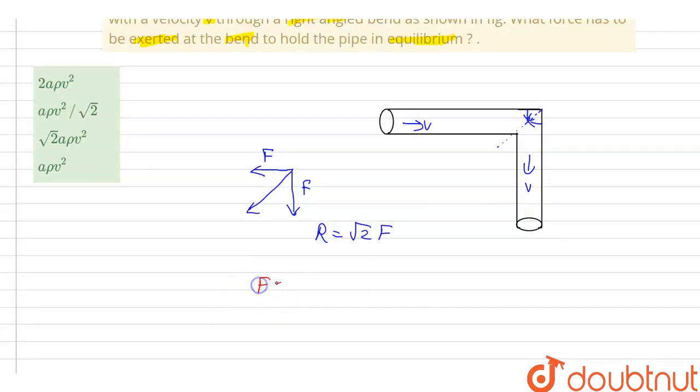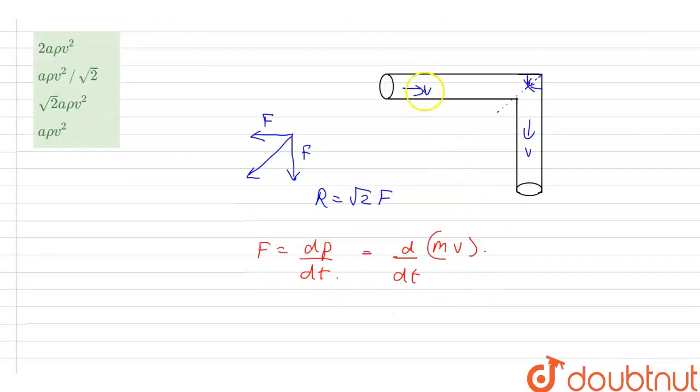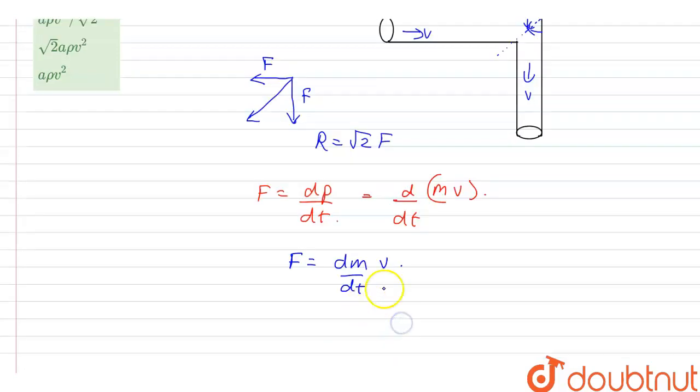Now we know that force is equal to rate of change of momentum, dp/dt, and dp/dt will be d/dt of momentum which is mass times velocity. But here we can see that velocity, the magnitude of velocity remains the same whereas the mass of the liquid will depend upon the volume transferred. Therefore, force will be equal to dm/dt times velocity.